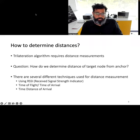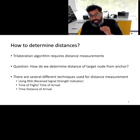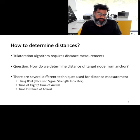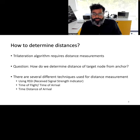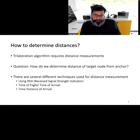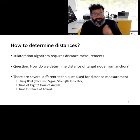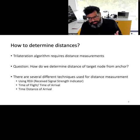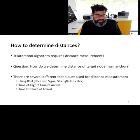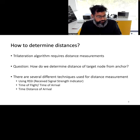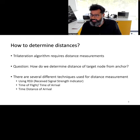What are the inputs required by the trilateration algorithm? It requires the distance of the target device from the anchor nodes. To determine this distance when you only know the received wireless signal strength, there are several techniques available. These include using the strength of the signal, time of flight or time of arrival, or time difference of arrival. We will look at these techniques in greater detail over the coming slides.